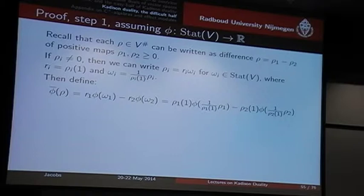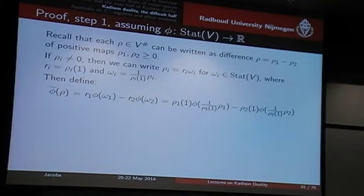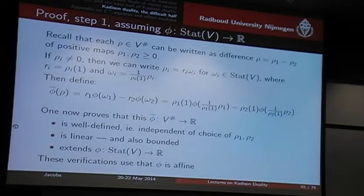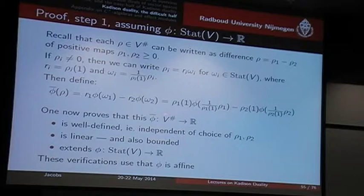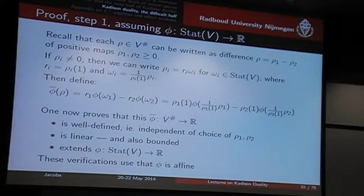It preserves affine combinations — well, convex combinations. If you write this out, you get a complicated expression. The next step is to prove a number of elementary things: first, that this phi-overline is well-defined, so that it doesn't depend on the rho-one and rho-two. Then, that it's linear, and also that it extends the original phi. This can all be done, and the crucial thing you have to use is that phi itself is an affine map. So, we have this extension. The next step is to prove that it's continuous — that it's weakly continuous — because then I can apply this duality result.